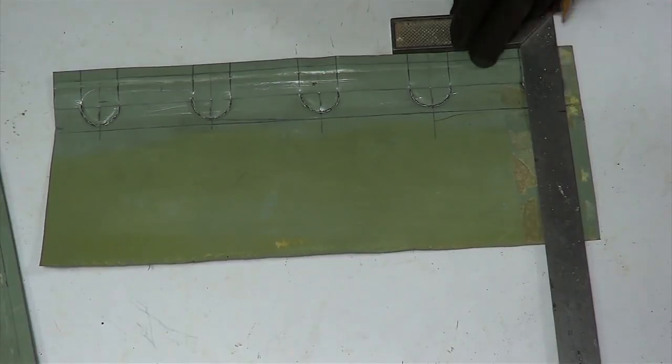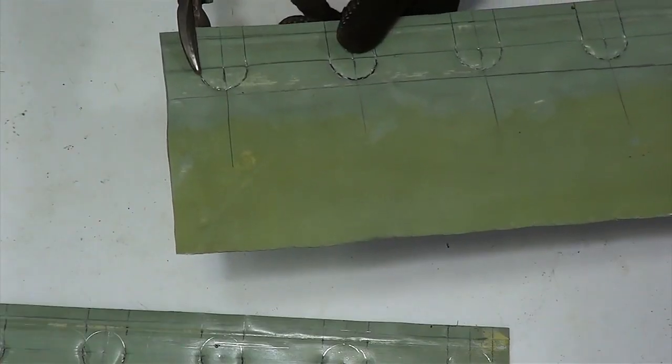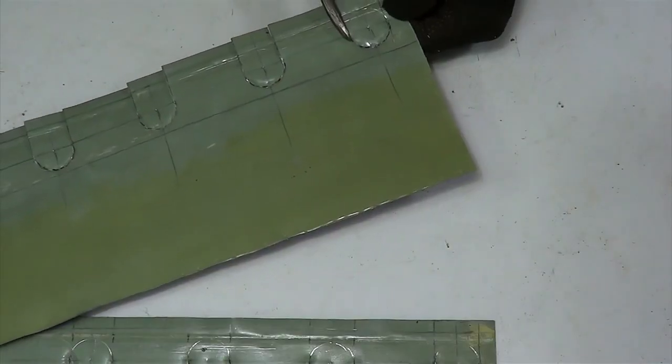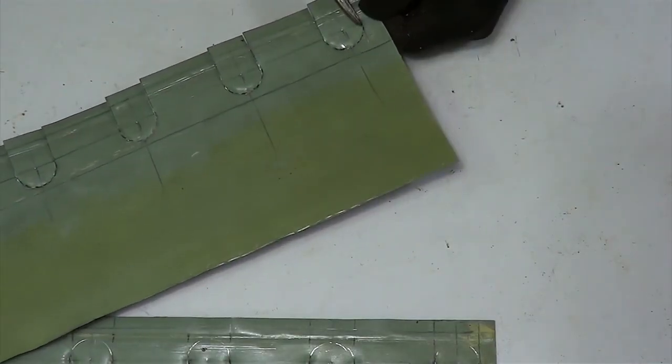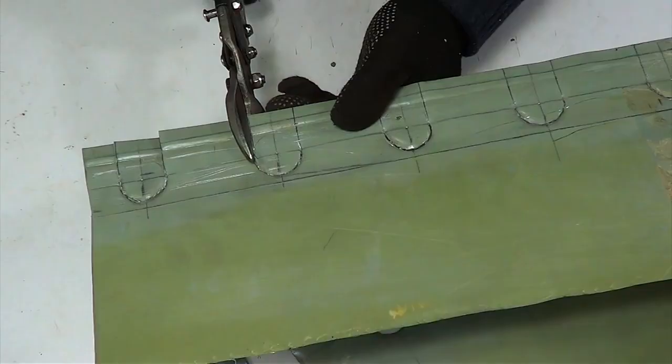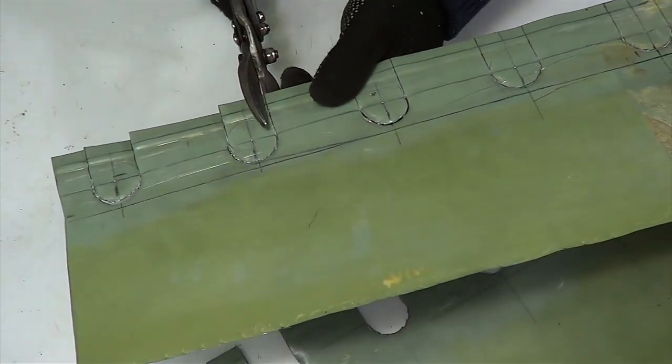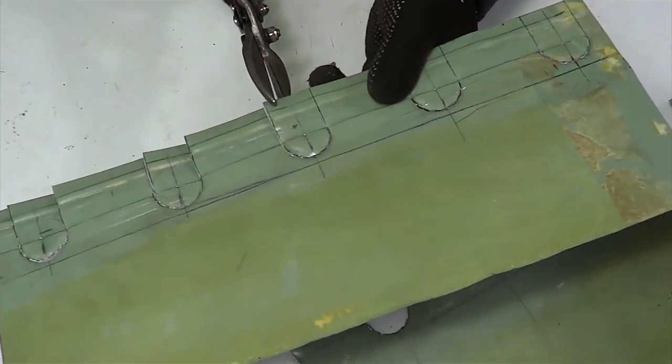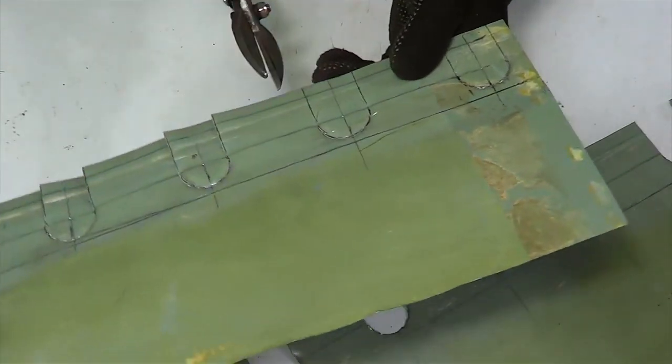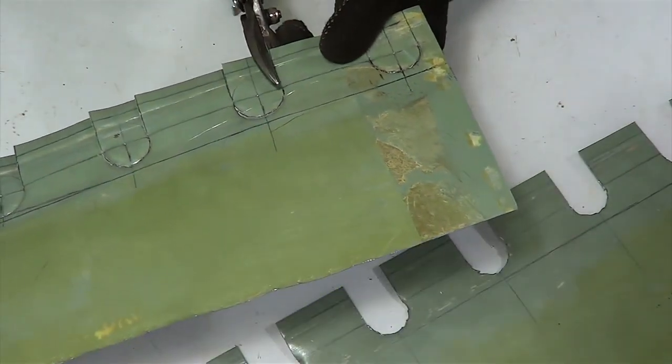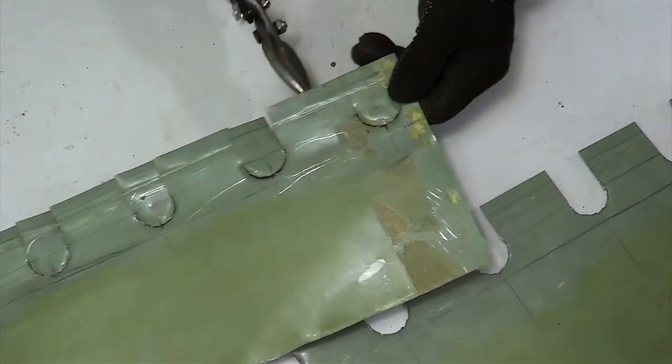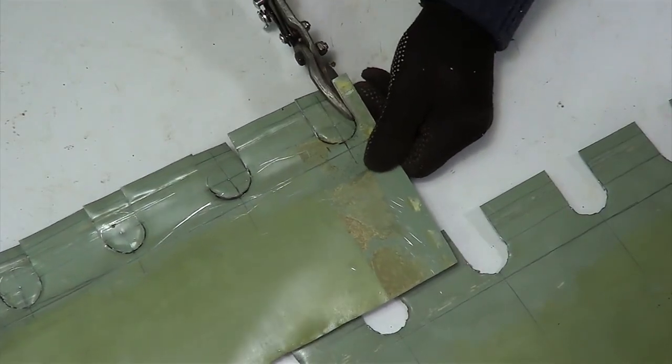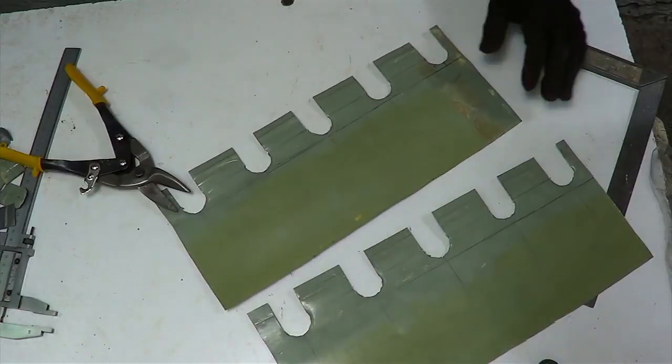Now we need to cut the metal as follows. Cut a straight line from the edge as I do. We got two such blanks.